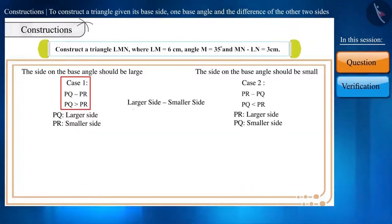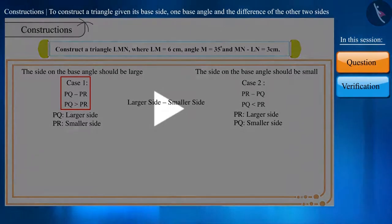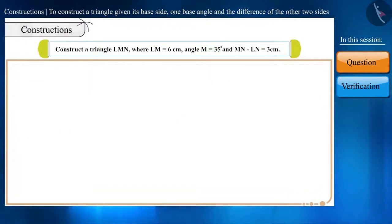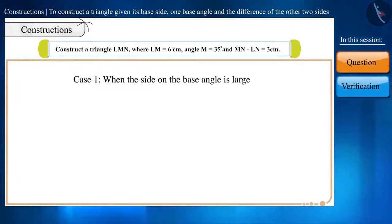Friends, can you tell why we will do the construction of this triangle according to Case 1? You can pause the video and think about the answer. Case 1 says that the side on the base angle should be greater than the other side. In this question, the measure of MN minus LN is given to be 3 cm. By looking at this, we know that side MN is greater than side LN.